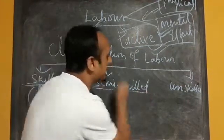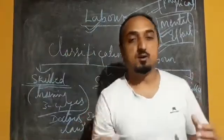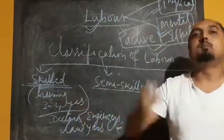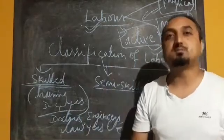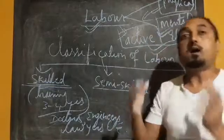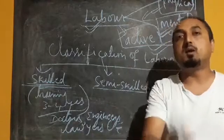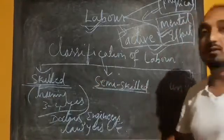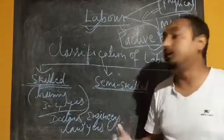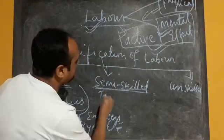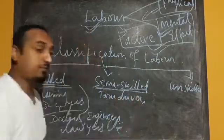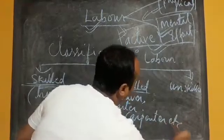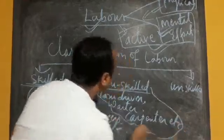Semi-skilled labor are workers who have gone for training for a very short period of time — maybe one month, two months, or a maximum of six months, not more than that. Any worker trained for only a short period of less than six months is categorized as semi-skilled labor. Examples include taxi drivers, waiters, and carpenters.